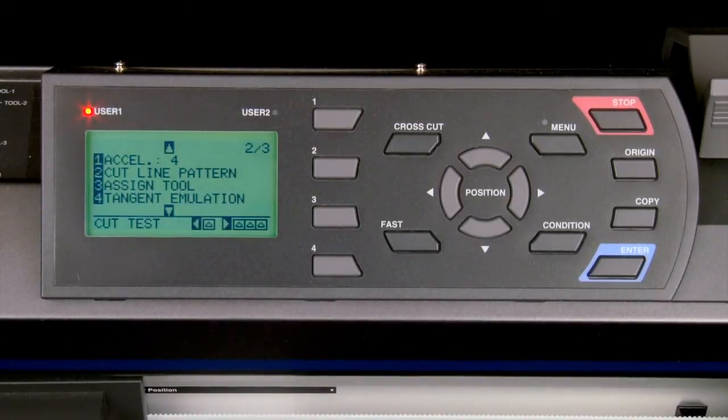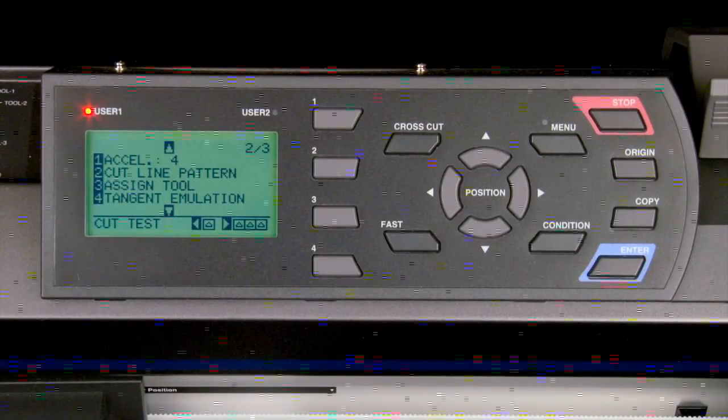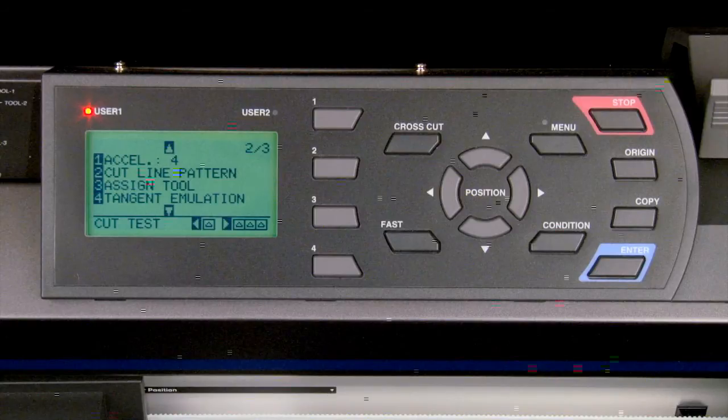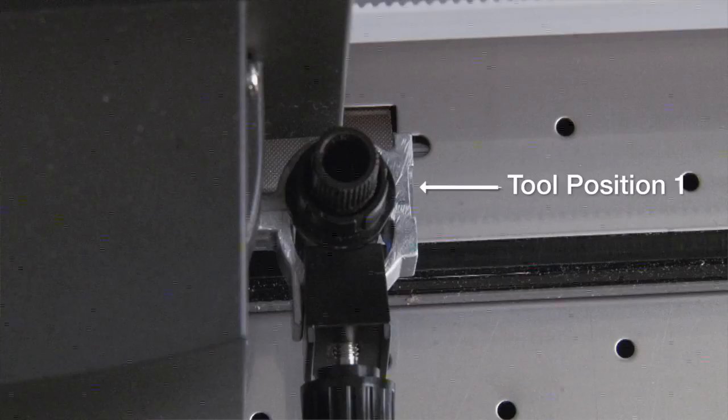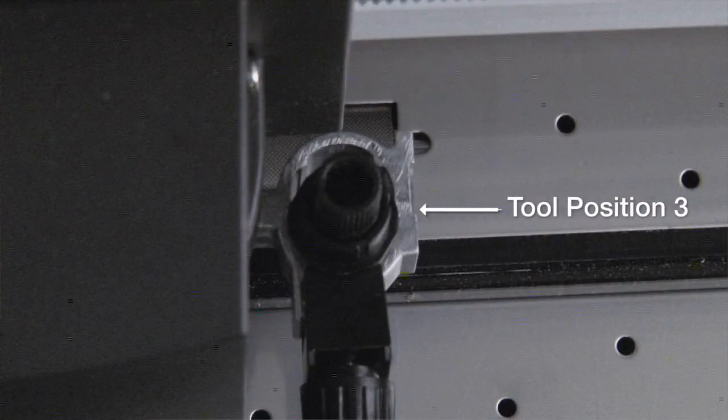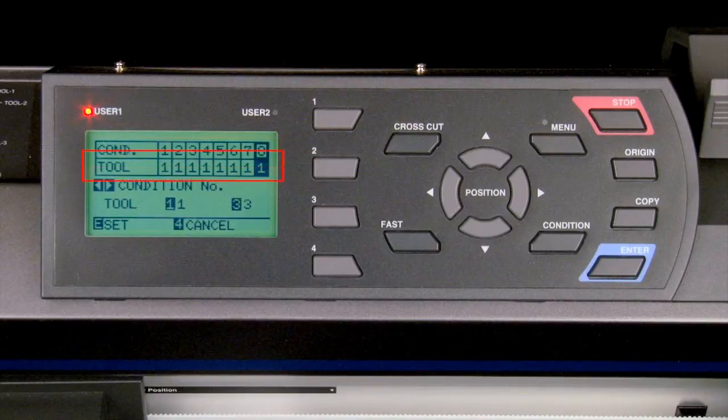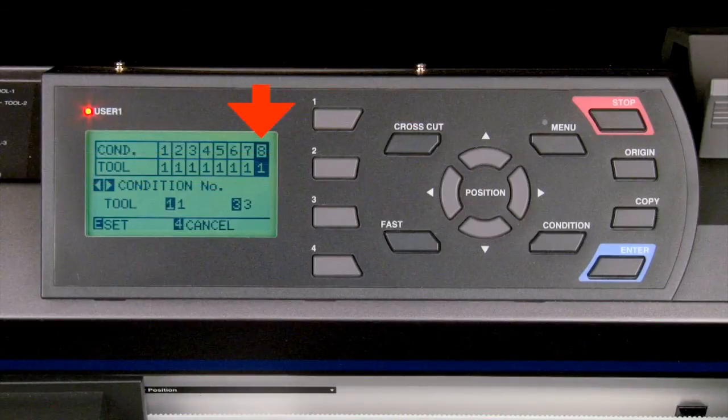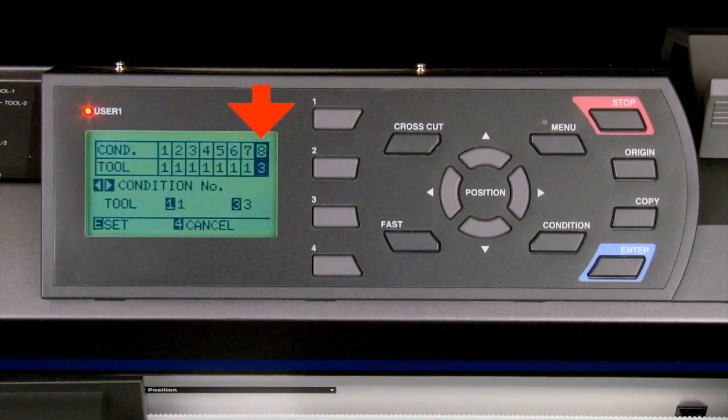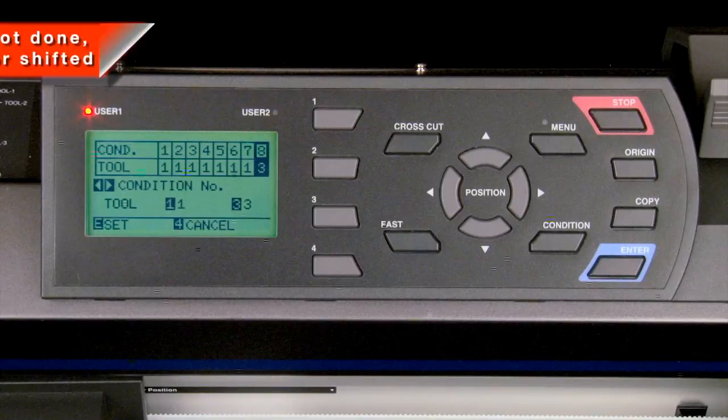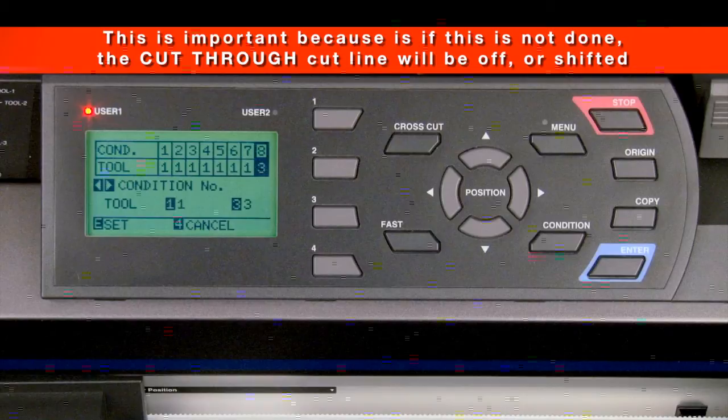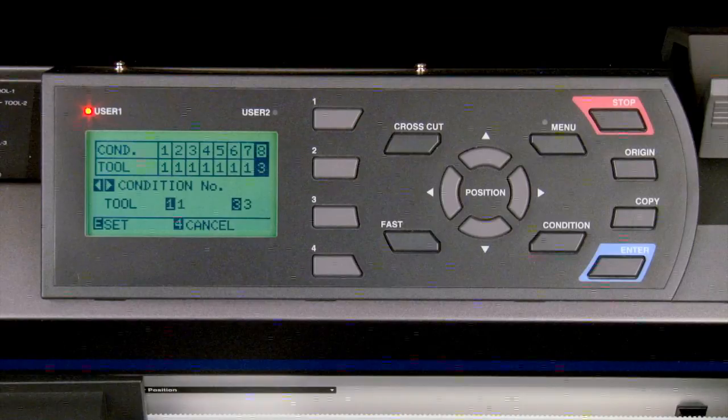The next step is an important one. We need to assign condition 8 to tool 3. Recall that the back slot is tool 1 and the front slot is tool 3. We'll press the 3 key for assign tool. The screen will display two rows. The top row is the condition number and the bottom row is the tool number assigned to each condition. The setting is at condition 8. We can press the 3 key and this will assign condition 8 to tool 3, the front slot of the tool holder. The reason this is an important step is if this is not done then the cut through cut line will be off or shifted. We can press enter to accept the value.